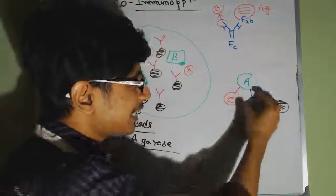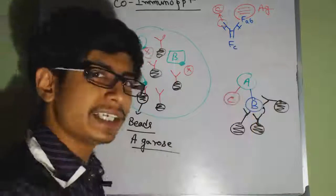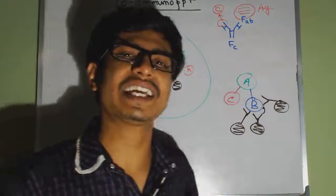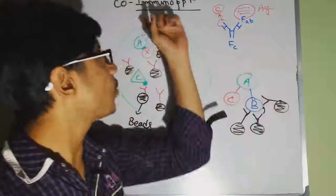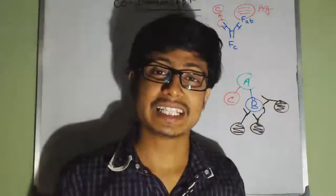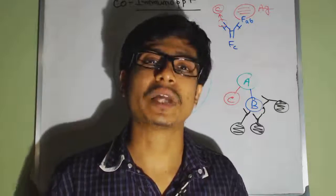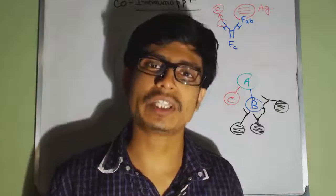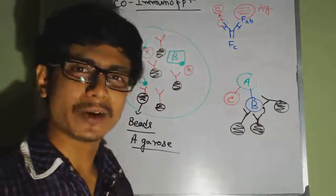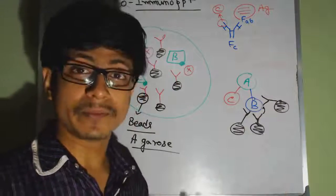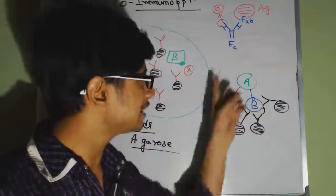As all proteins are involved together, when we allow the antibody to bind to B protein — and the antibody is attached to beads — it will drag B down, and as it drags B it also drags A and C, because A and C are attached with B. That's why it's called co-immunoprecipitation: the immunoprecipitation process occurs together between different proteins.